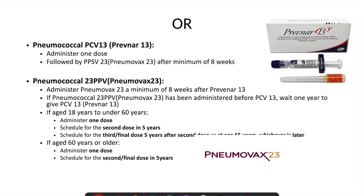If neither PCV15 nor PCV20 is available, we vaccinate the patient with PCV13. A single dose is recommended, but this should be followed by PPSV23 or Pneumovax23 after a minimum of 8 weeks. Regarding the PPSV23 vaccine — this pneumococcal polysaccharide vaccine is administered after 8 weeks of giving either PCV13 or PCV15. If a patient has already received PPSV23 prior to PCV13, we need to wait one year before giving PCV13.